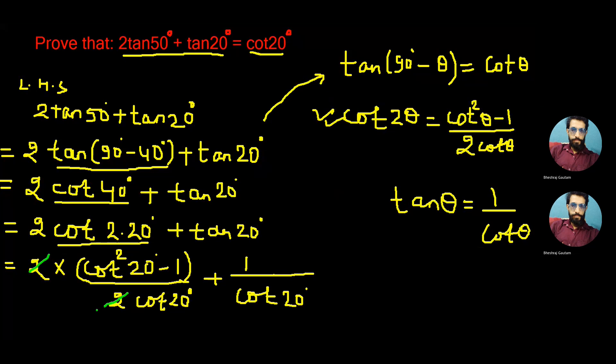Above step can be written now as cot²20° minus 1 plus 1, if we take the LCM which is cot20°, both being the same denominator in both parts.